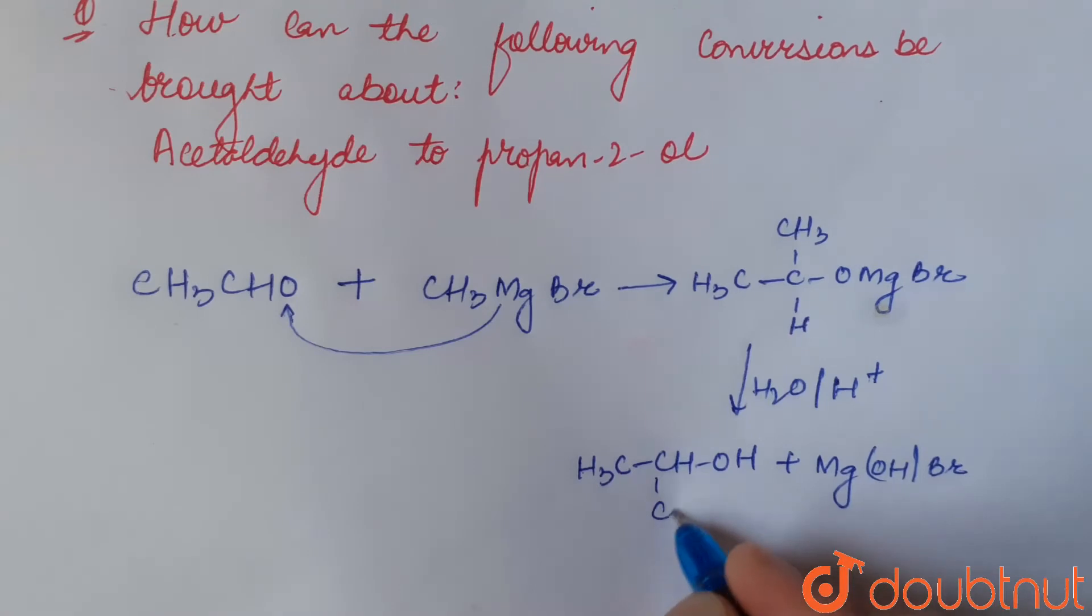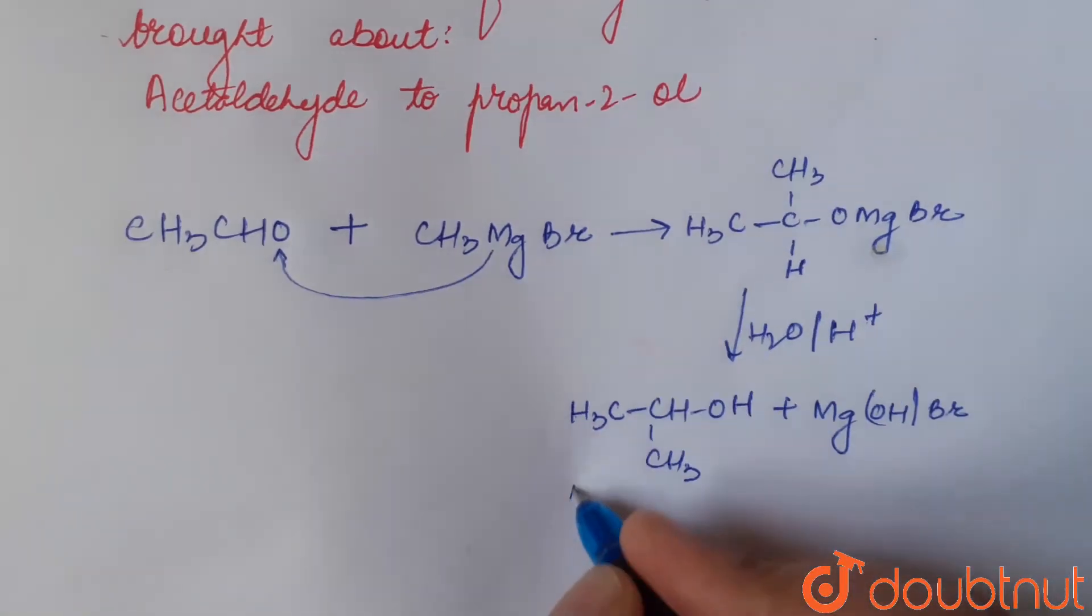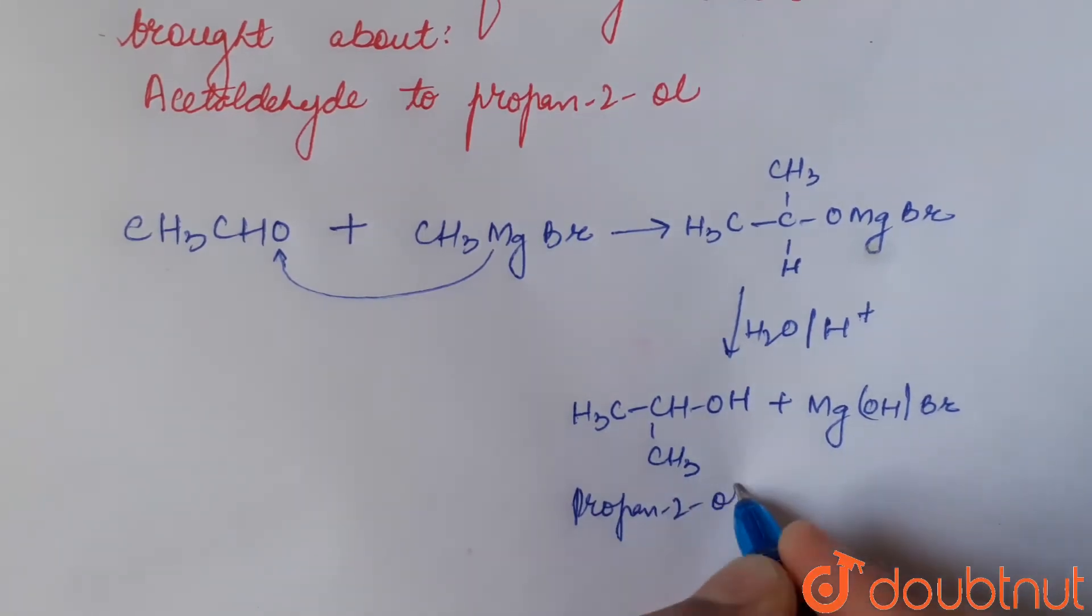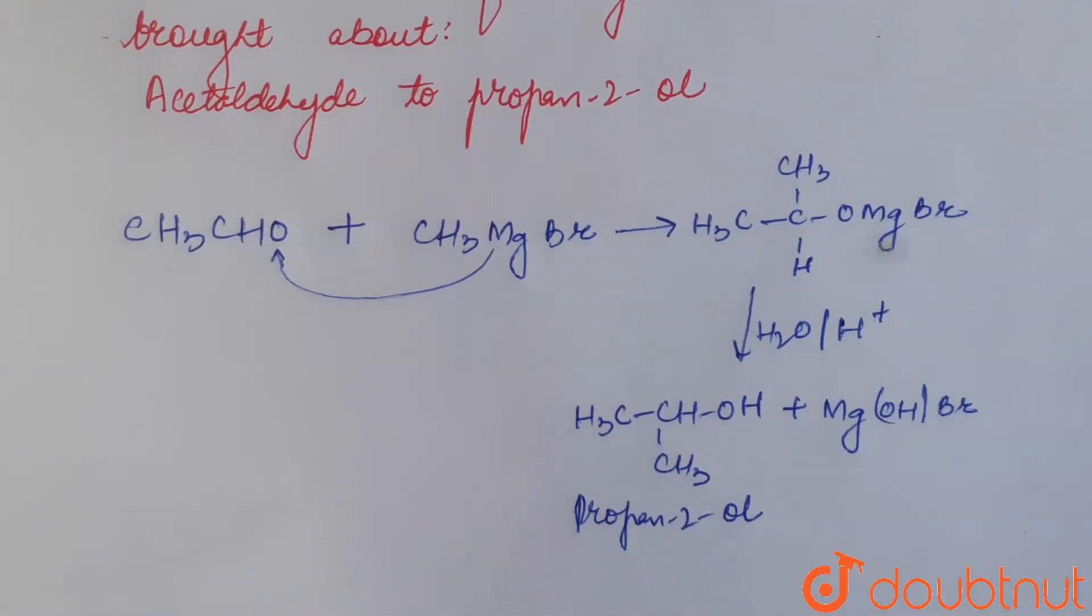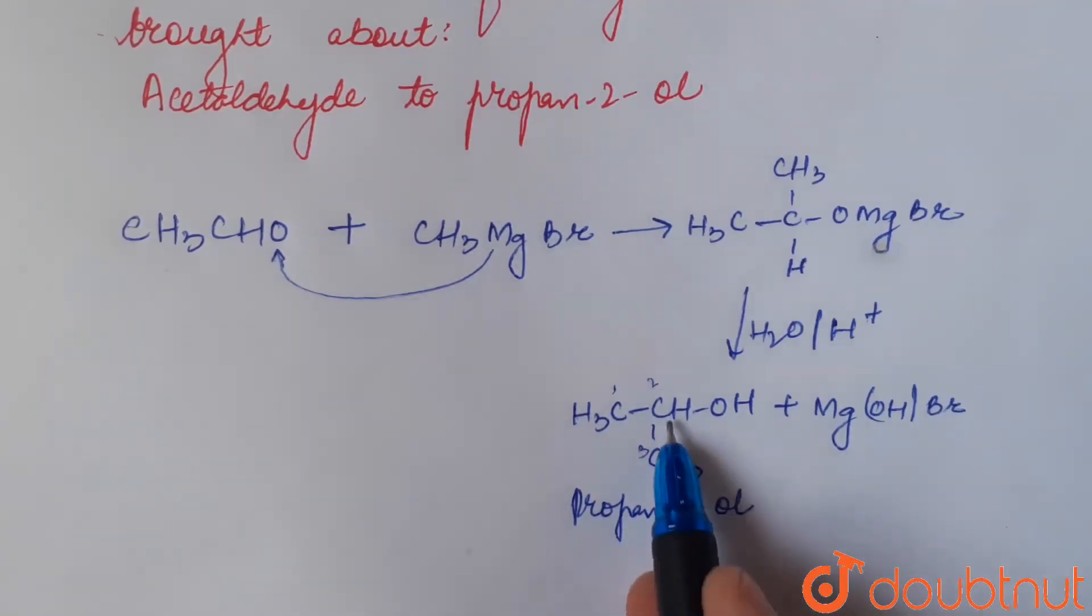Sorry, here it is CH3. So this is propan-2-ol as we have three carbons, one, two, three. On second position we have OH, so it is propan-2-ol.